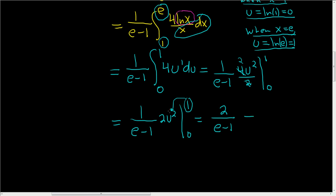And then when we plug in 0, this whole thing is going to go away, so minus 0. So the final answer is 2 over e minus 1. And that is the average value.